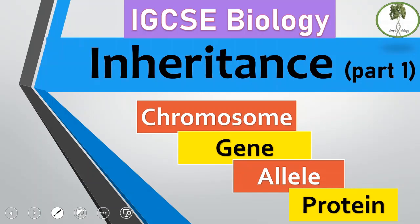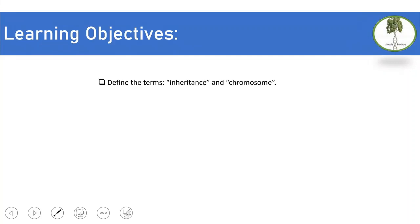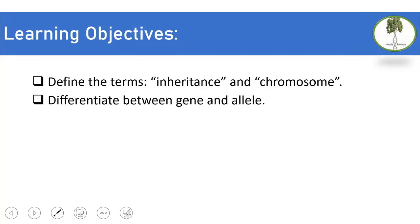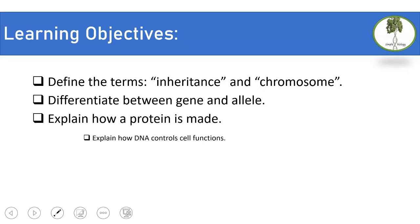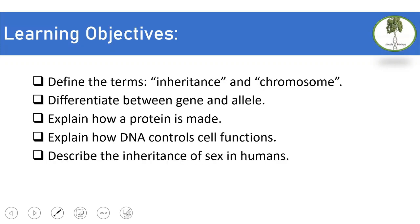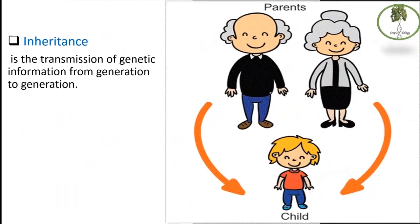Welcome to a new lesson from Simple Biology. Today's lesson is about inheritance, part one. In this lesson we will define the terms inheritance and chromosomes, differentiate between gene and allele, explain how a protein is made, explain how DNA controls cell functions, describe the inheritance of sex in humans, and define haploid nucleus and diploid nucleus.